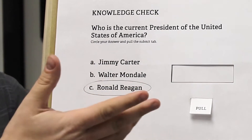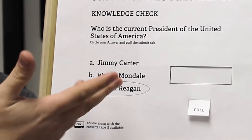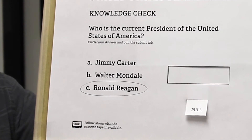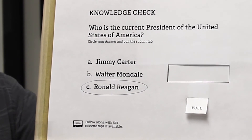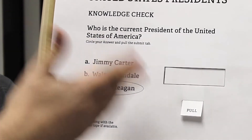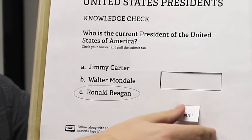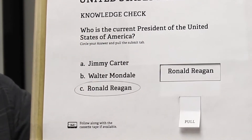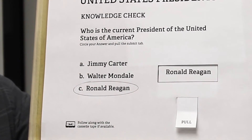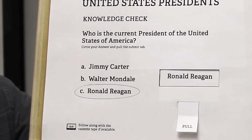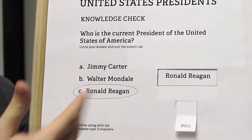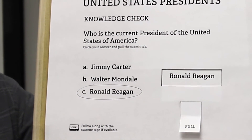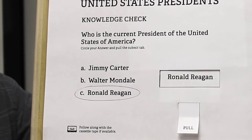And here we have a pretty simple knowledge check. It's already filled in, so obviously this slide isn't set to reset when you come back to it, but I think it'll give you a good idea. You make your selection, pull this little tab here — Ronald Reagan. So that's correct. It's not Jimmy Carter, it's not Walter Mondale. Very easy to assess yourself and make sure you're understanding the content accurately.